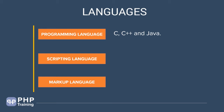Let's look at scripting languages. PHP, JavaScript, Python, and Ruby are scripting languages. They are built on top of programming languages — they are not the underlying languages. They use languages like C, C++, or Java, or other programming languages, and they are built on top of those to solve a specific challenge.